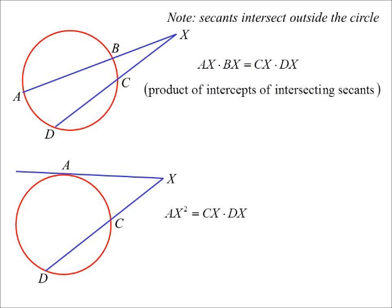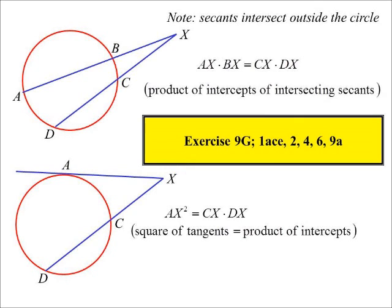This one we can put as: square of the tangent equals product of intercepts. We'll finish off our look at circle geometry with 9G.